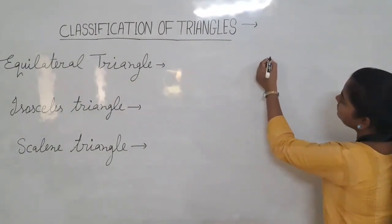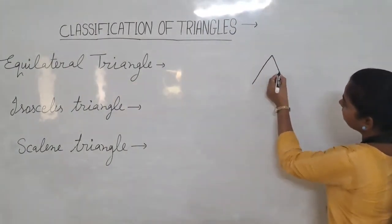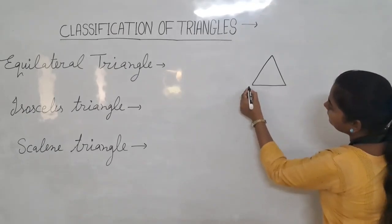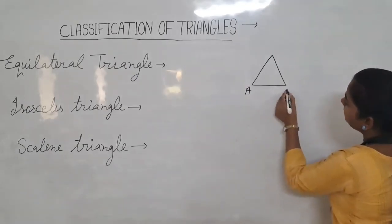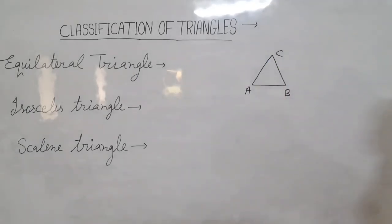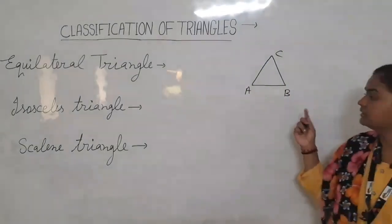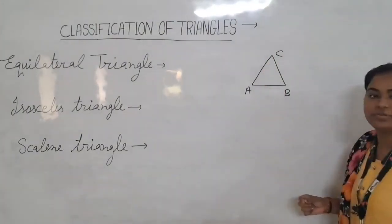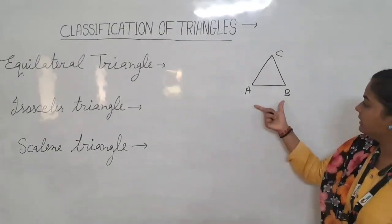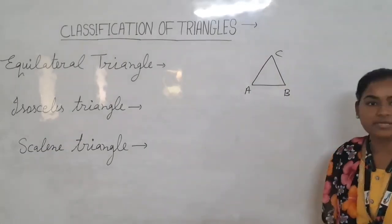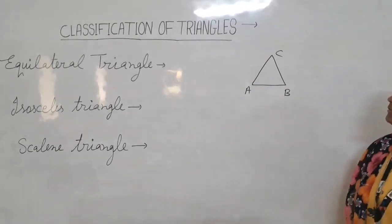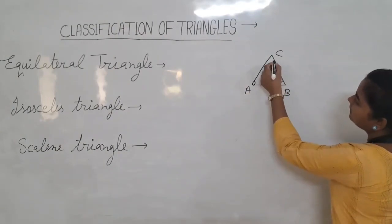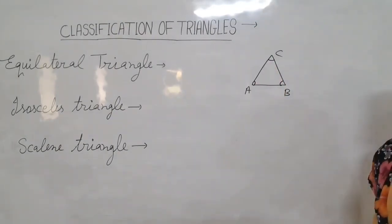Suppose we have a triangle named A, B, C. In this triangle we have three vertices: A, B, C; and three sides: AB, BC, AC; and three angles: angle A, angle B, and angle C. So, it is a triangle.